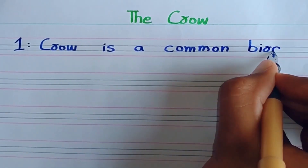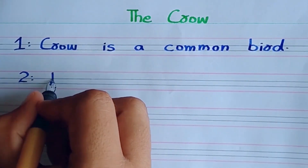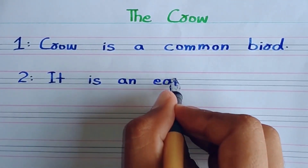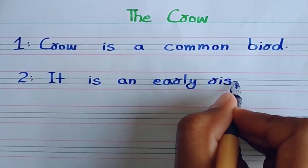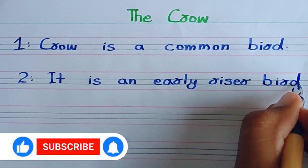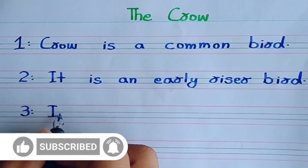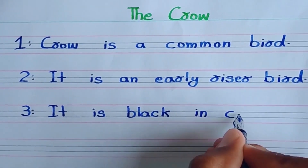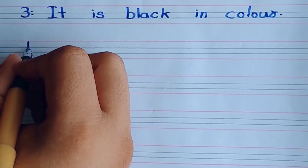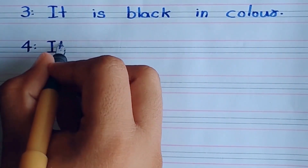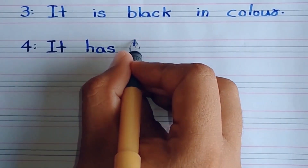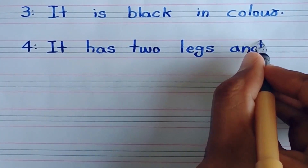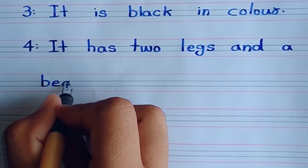Crow is a common bird in our country. It is an early riser bird. It is black in color. It has two legs and a beak.